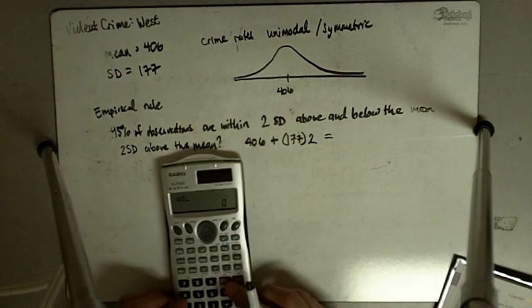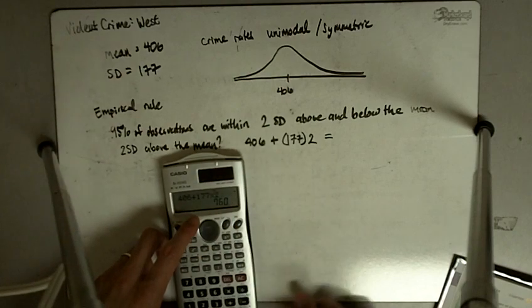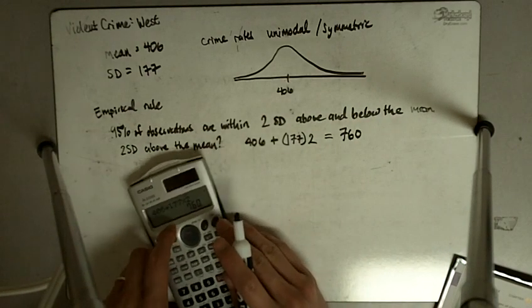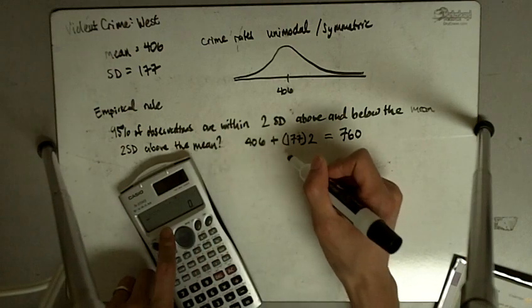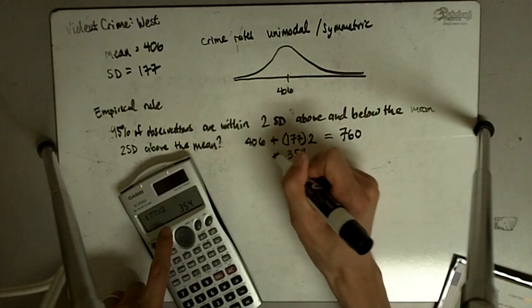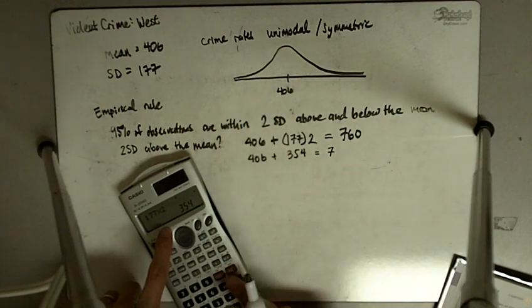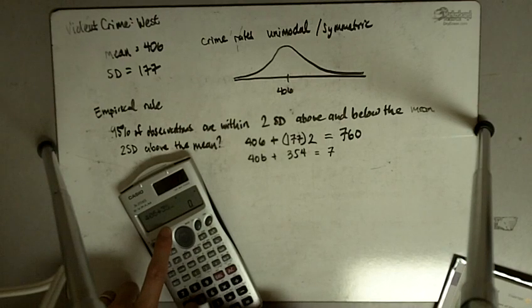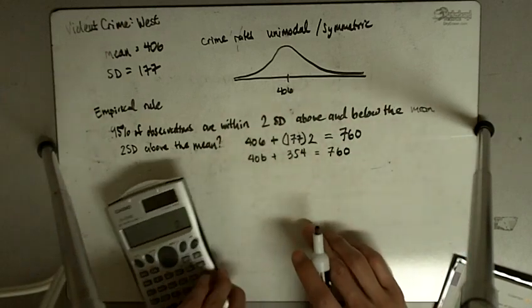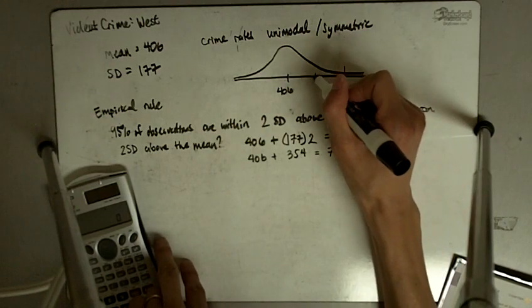So it's 406 plus 177 times two. If you have a fancy calculator, you can just enter the whole thing and you will get 760, because these calculators understand order of operations. If you don't have a calculator like this, you have to do 177 times two first and get 354, then add 406. So 406 plus 354 gives you 760. This is the upper end — two standard deviations above the mean.